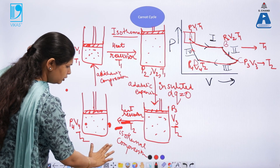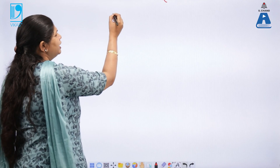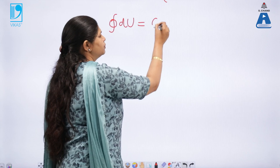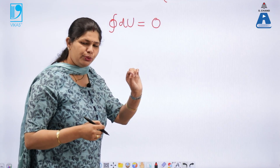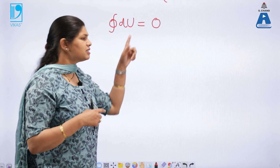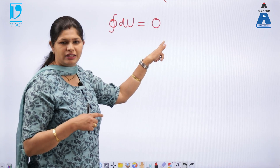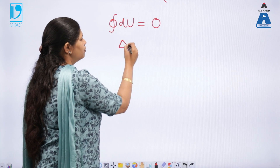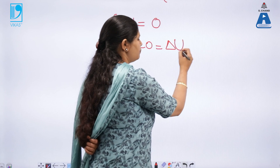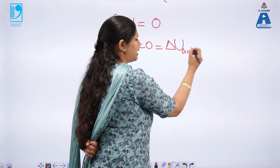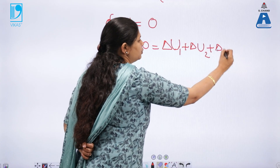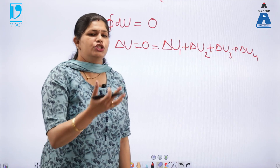According to the formula for a cyclic process, if we write the change in internal energy, we know that for a cyclic process the total internal energy change ΔU is zero, because we return to the same point. As I mentioned in the previous video, all state functions depend only on the initial and final state, so for a cyclic process the overall change in a state function is zero. But ΔU overall is made up of all the small processes: ΔU1 + ΔU2 + ΔU3 + ΔU4 = 0.